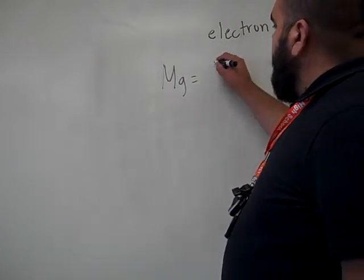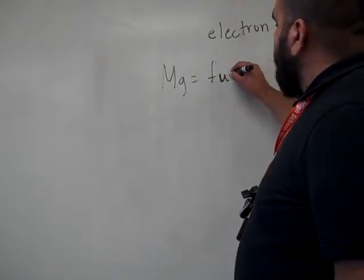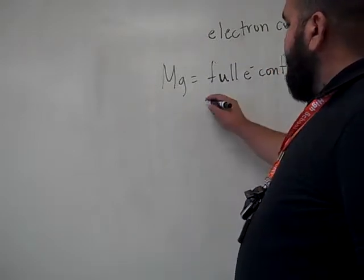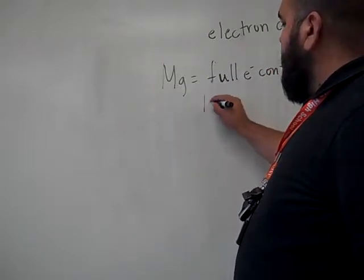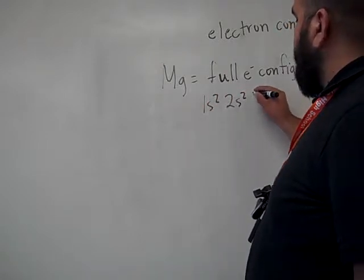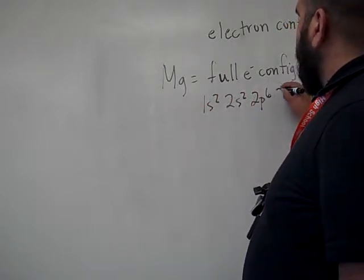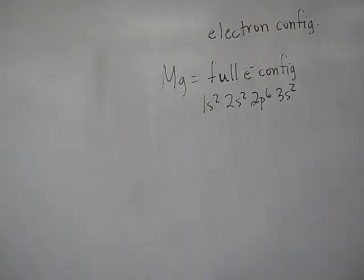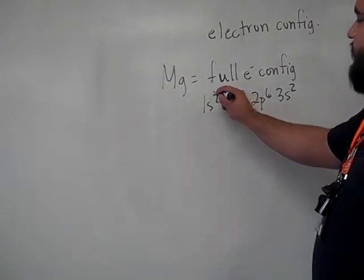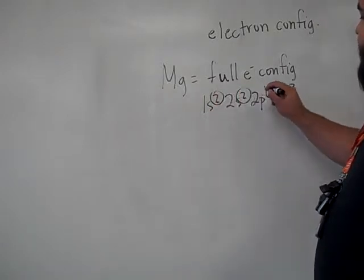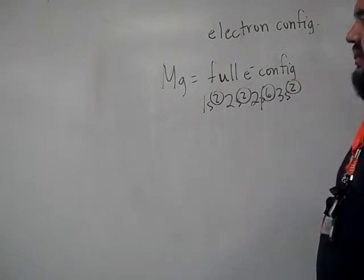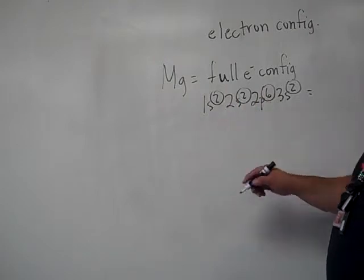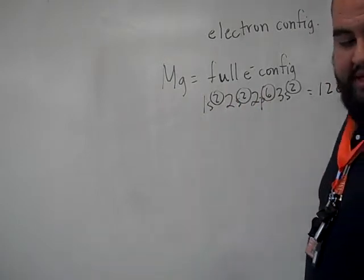We use magnesium's electron configuration to find its valence electrons. Now, if we do the full electron configuration, magnesium is like this. It is 1s2, 2s2, 2p6, 3s2. Let me just double check that that's correct. Yes. Now if you count these numbers right here, that will give you the total electrons of magnesium which ends up being 12. Twelve electrons in magnesium.